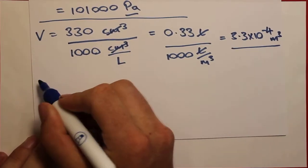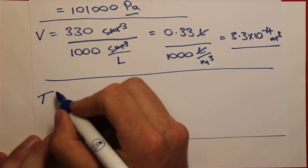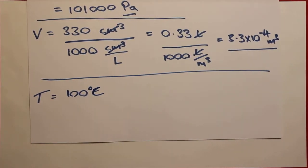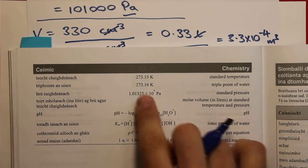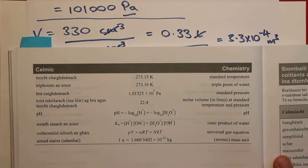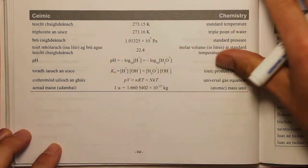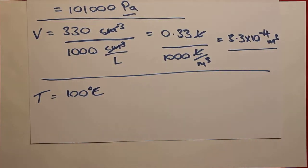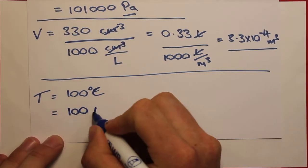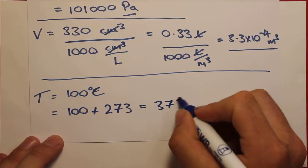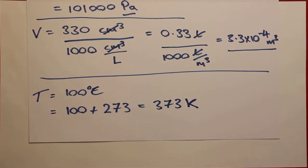Finally, we convert temperature. We're given 100 degrees Celsius and need to add 273 kelvin to convert to kelvin (found on page 64 of the tables). So 100 + 273 = 373 kelvin. Now all our units are correct and we can proceed with the equation.